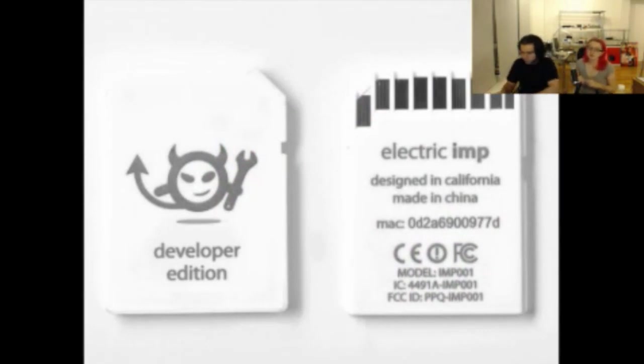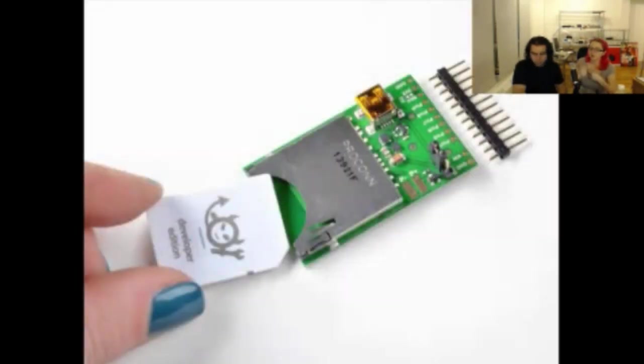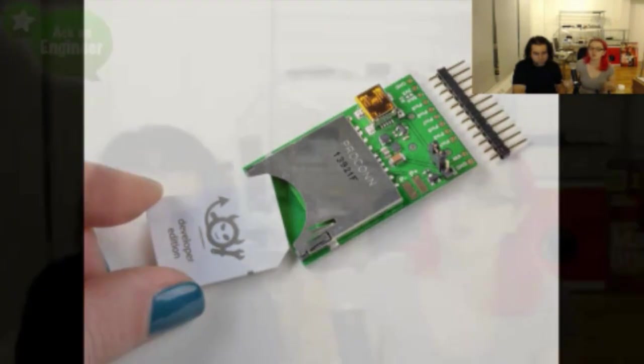instead what you do is you go to the ElectricIMP website and you use their web software and you say, hey, this card ID number, XXX is mine and on the back it has like the unique MAC address and that is unique to every card. And then you say, hey, for that card, upload my new code and the ElectricIMP will automatically know to go to the website, get the latest code, update itself with this Wi-Fi bootloader and it'll run it. So it's a little processor with Wi-Fi built in that you upload wirelessly. So it's very powerful. And I think it's very interesting.